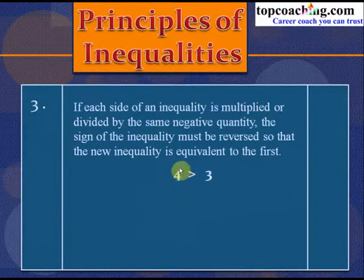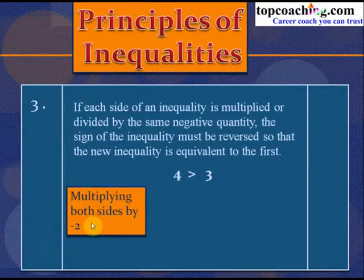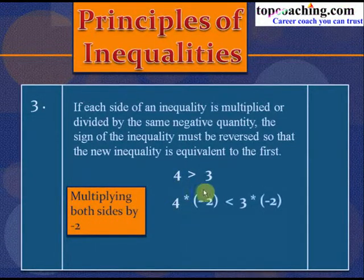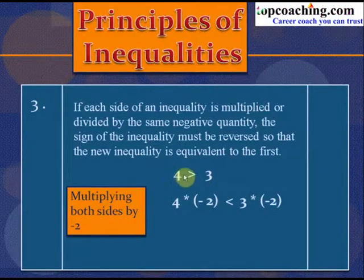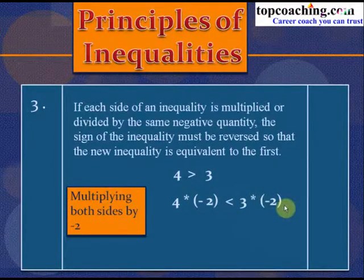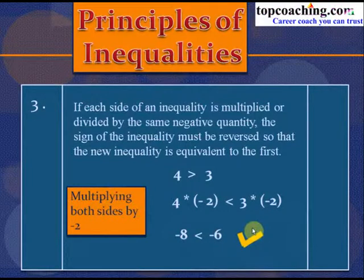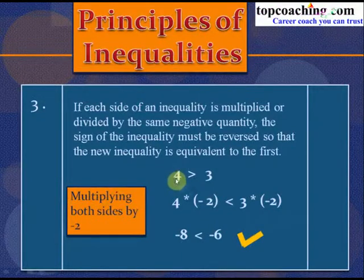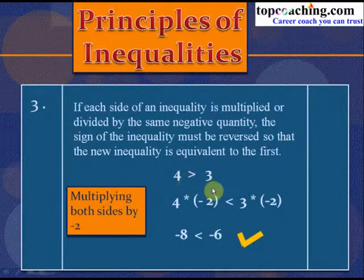For example, with 4 > 3, multiplying both sides by −2 and reversing the sign gives −8 < −6, which is true — we know −8 is less than −6. So when multiplying both sides by a negative quantity, we must reverse the sign of the inequality.